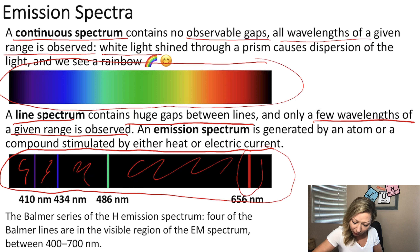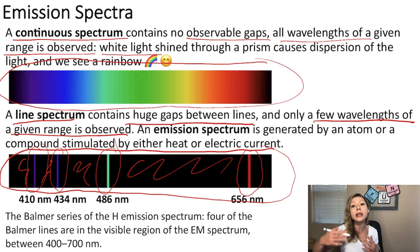Now, an emission spectrum can be generated by an atom or a compound stimulated by either heat or electric current. In this spectrum right here,